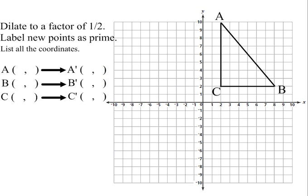Okay, here is a dilation to a factor of a half of a triangle. The coordinates for A, because we're going to list the coordinates first, 2 to the right and 10 up. That would be positive 2 for the x-coordinate, and the y-coordinate would be 10.